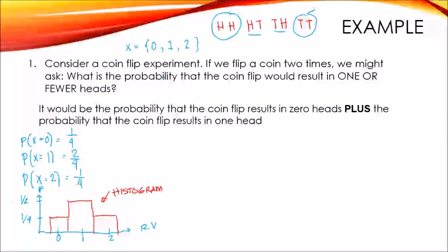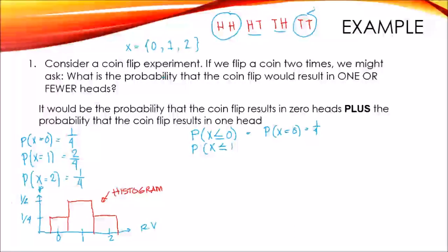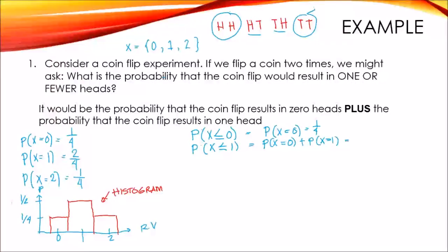Now let's compute the cumulative probability distribution. When x is less than or equal to zero, we only sum the probability when x equals zero, which is one-fourth. When x is less than or equal to one, that is the probability when x equals zero plus the probability when x equals one, which is one-fourth plus two-fourths, and the result is three-fourths.